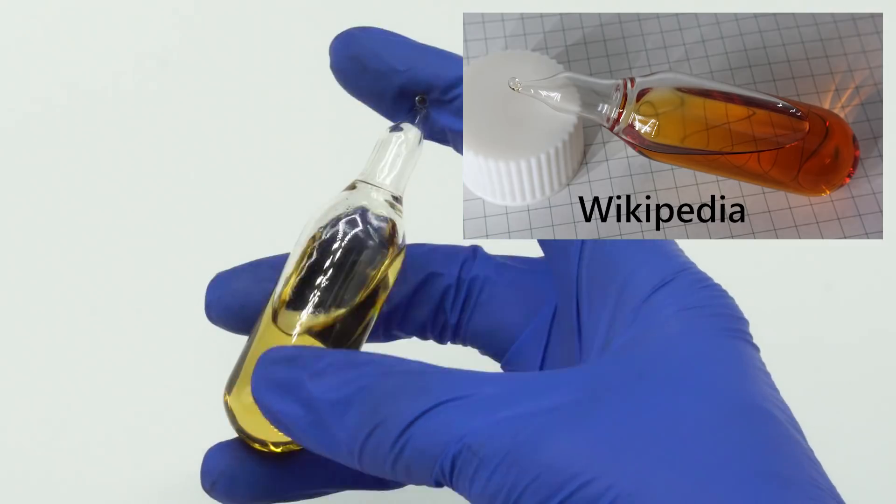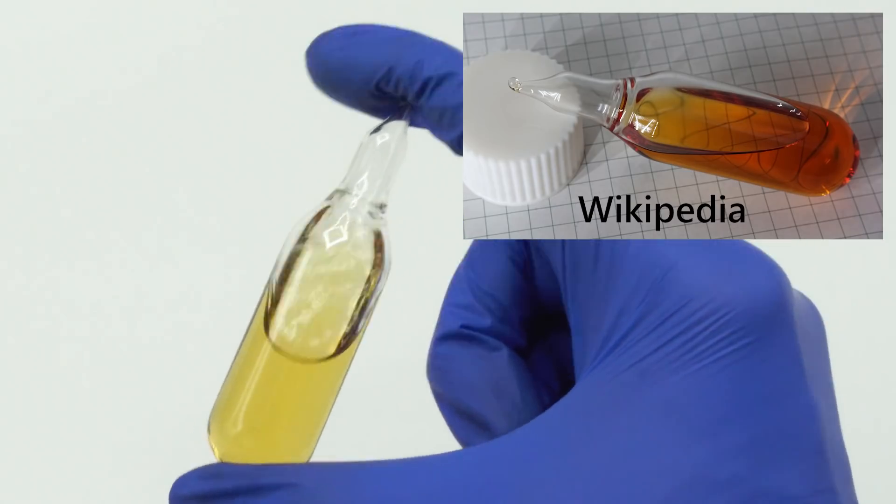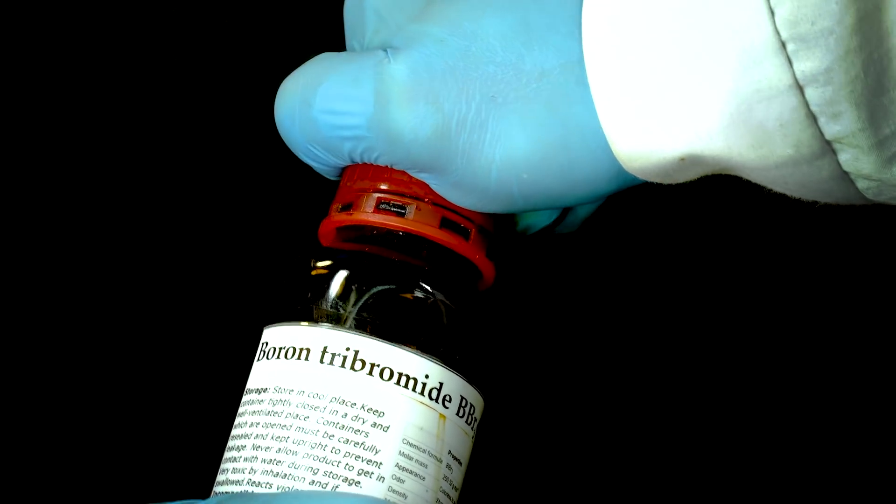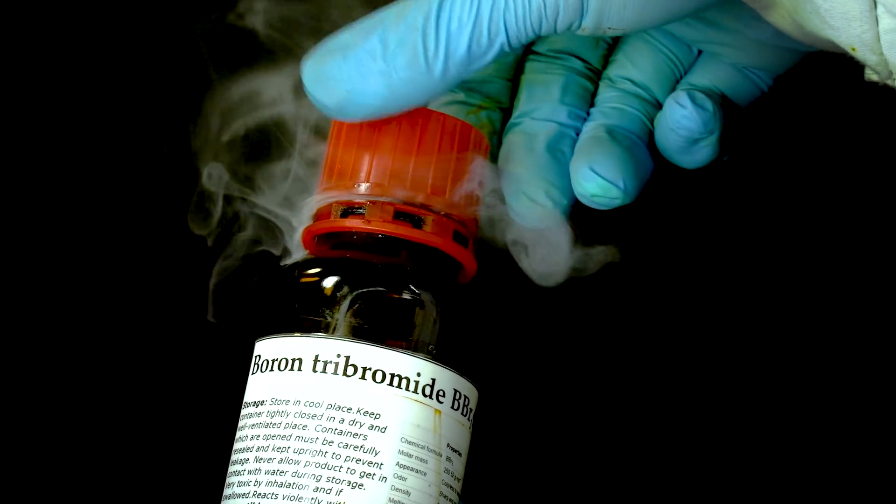Look at this ampoule, it contains 20 milliliters of boron tribromide. This yellowish liquid smokes in the air very actively, forming fog from hydrogen bromide.